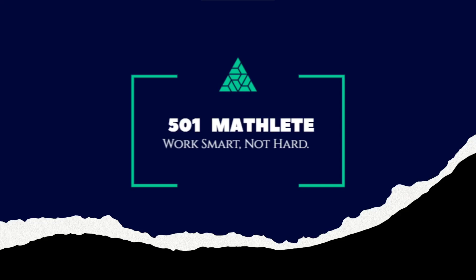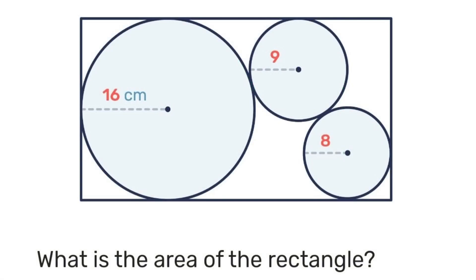Welcome to 501 Magnet, where we work smart, not hard. In today's problem we're given this rectangle and inside are three circles of radii 16 centimeters, 9 centimeters, and 8 centimeters. With those three pieces of information, we're asked to determine the area of the rectangle.